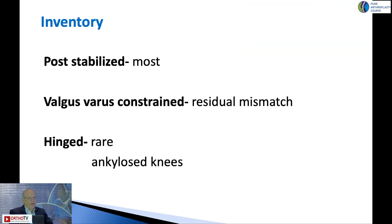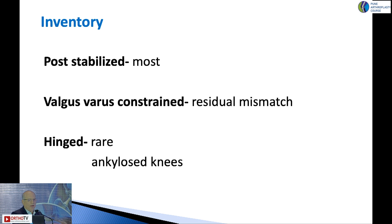For most stiff knees, a posterior stabilized primary component is good enough. However, for all these cases, you must have a valgus-varus constraint — TC3 or CCK — on the table, because very often you end up with residual mismatch and need to convert to that implant. A hinged knee is rarely needed; usually you only need one when the knee is totally ankylosed and you cannot salvage the collateral ligaments.